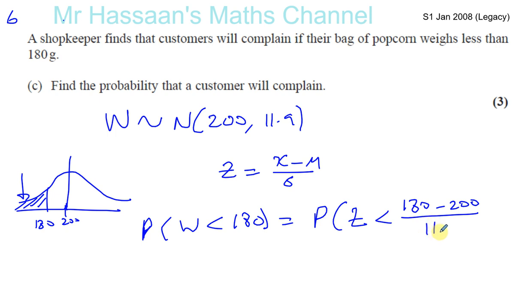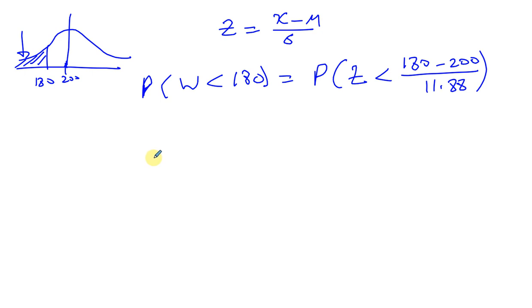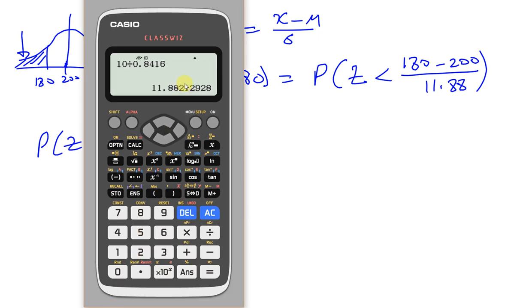We've got to find the probability that Z is less than this value. So let's work out what that is with a calculator: 180 minus 200 over our last answer. You're going to get minus 1.68. So we need the probability that Z is less than minus 1.68.